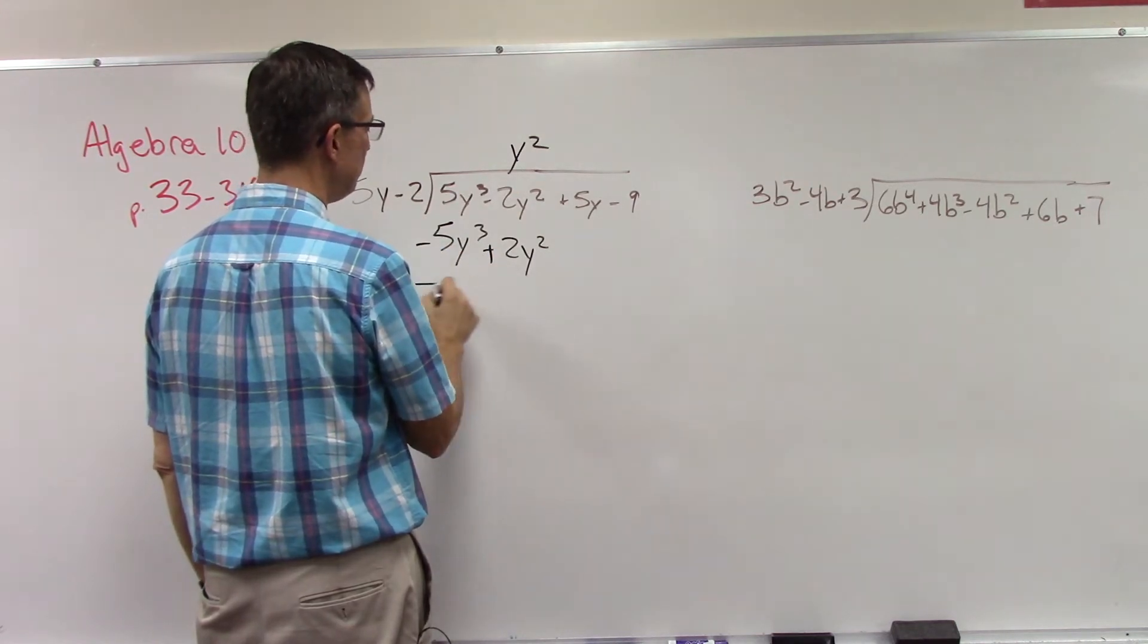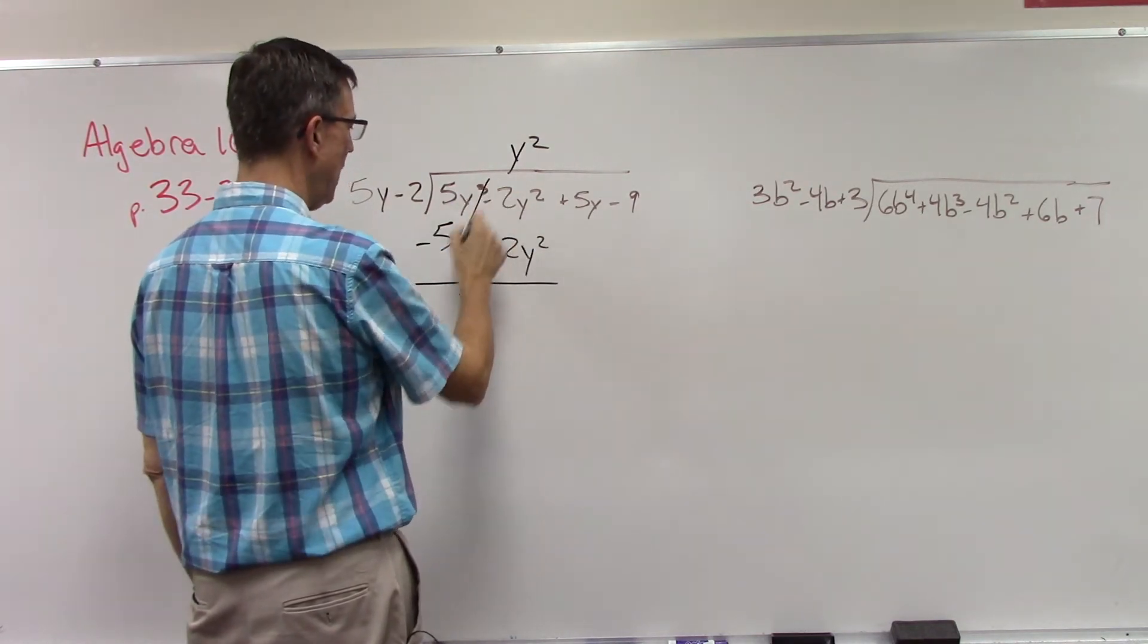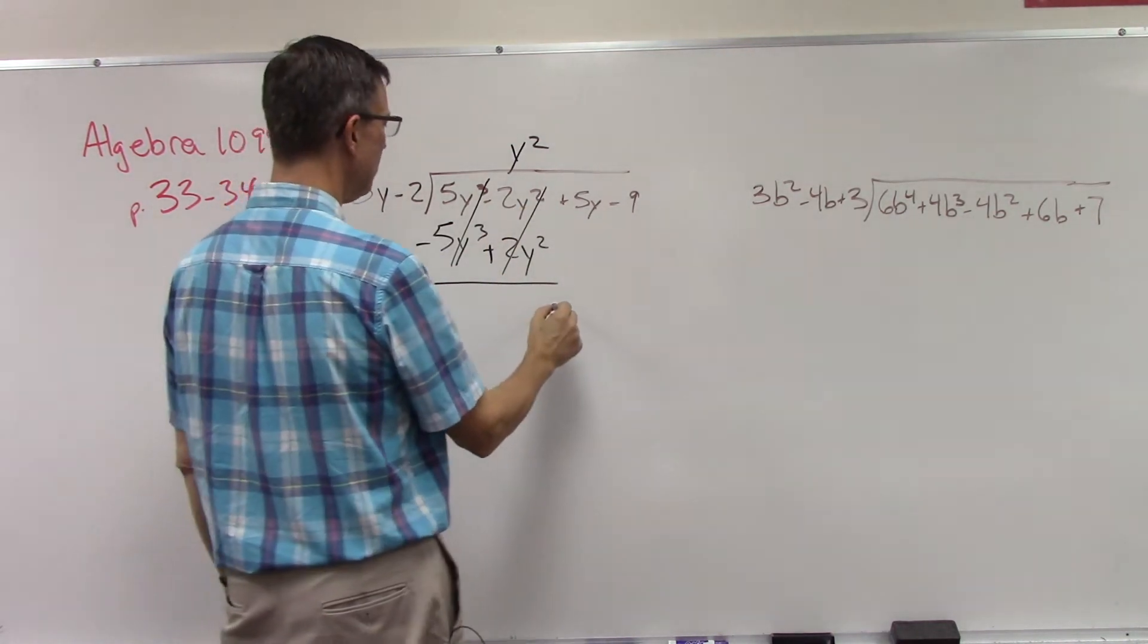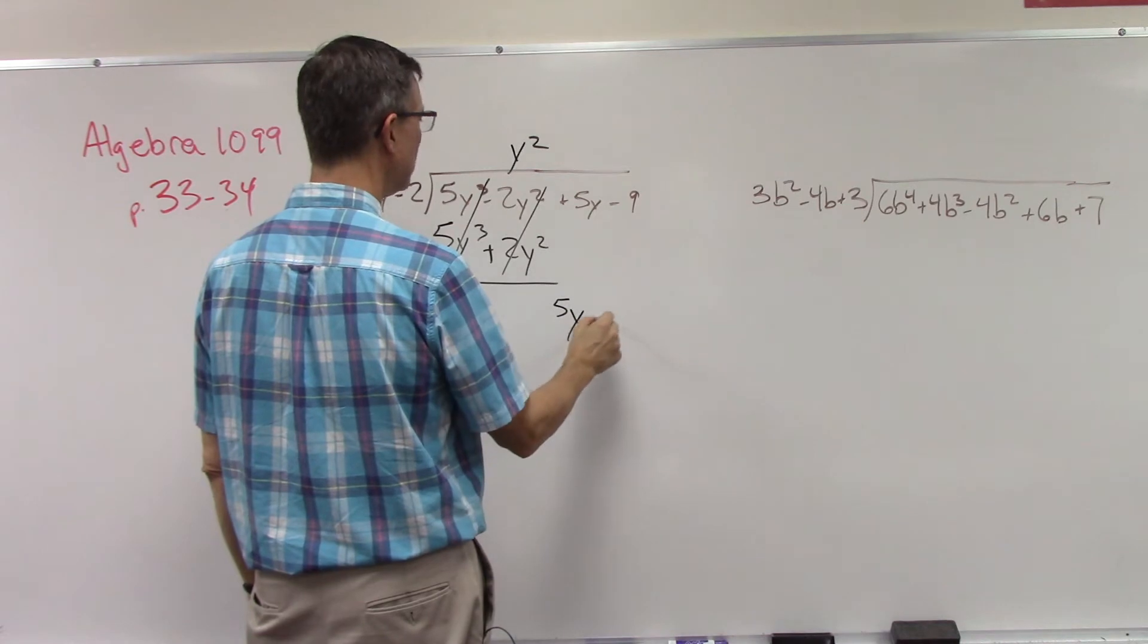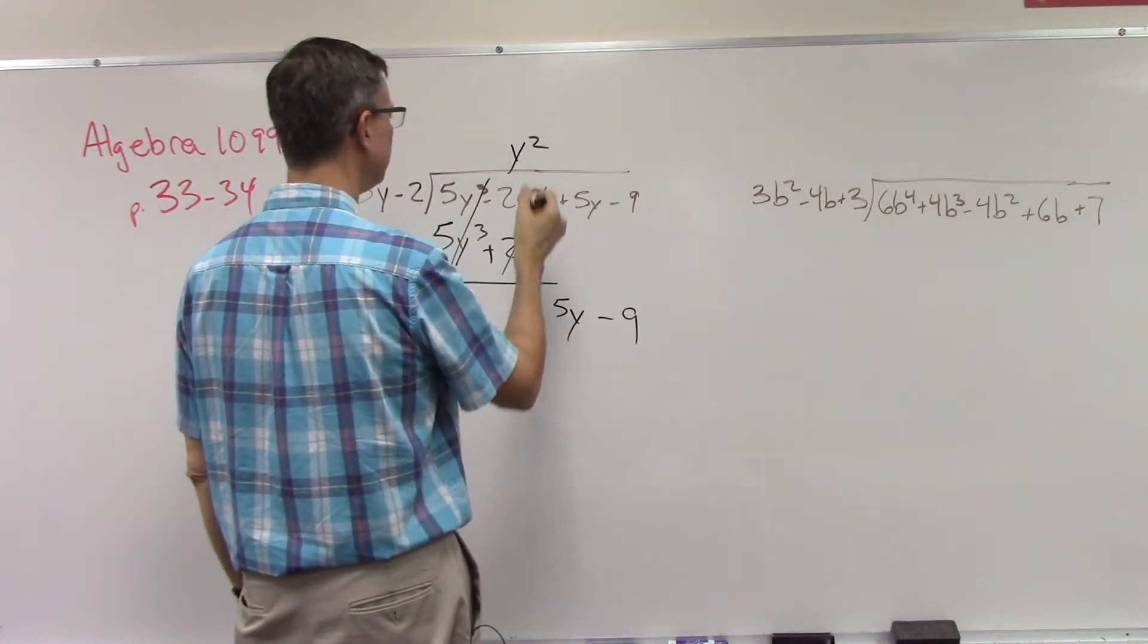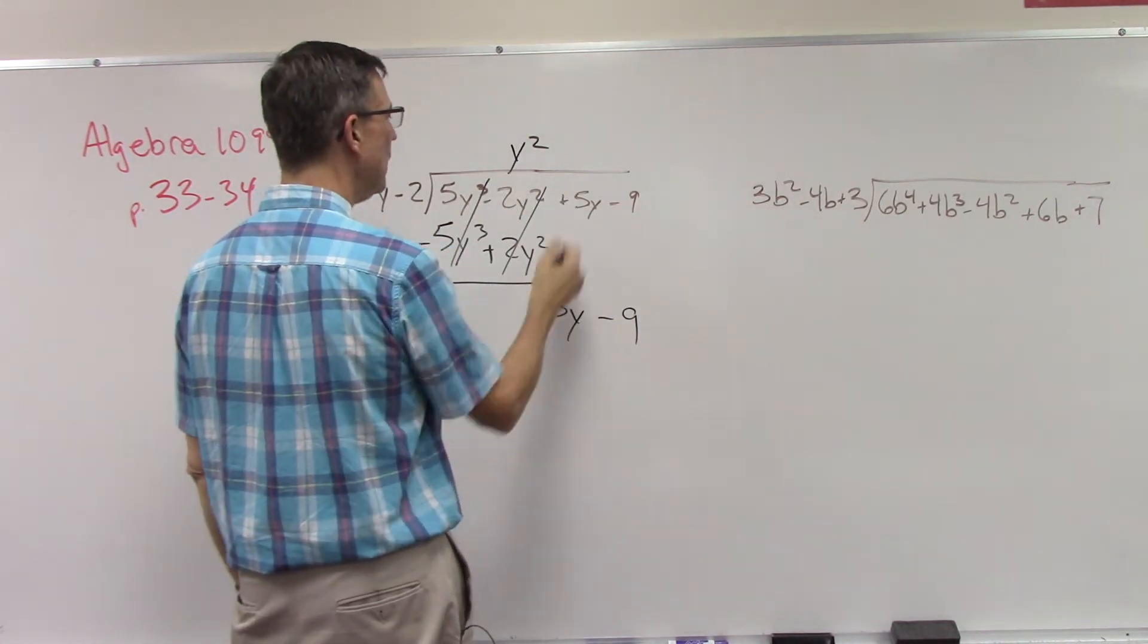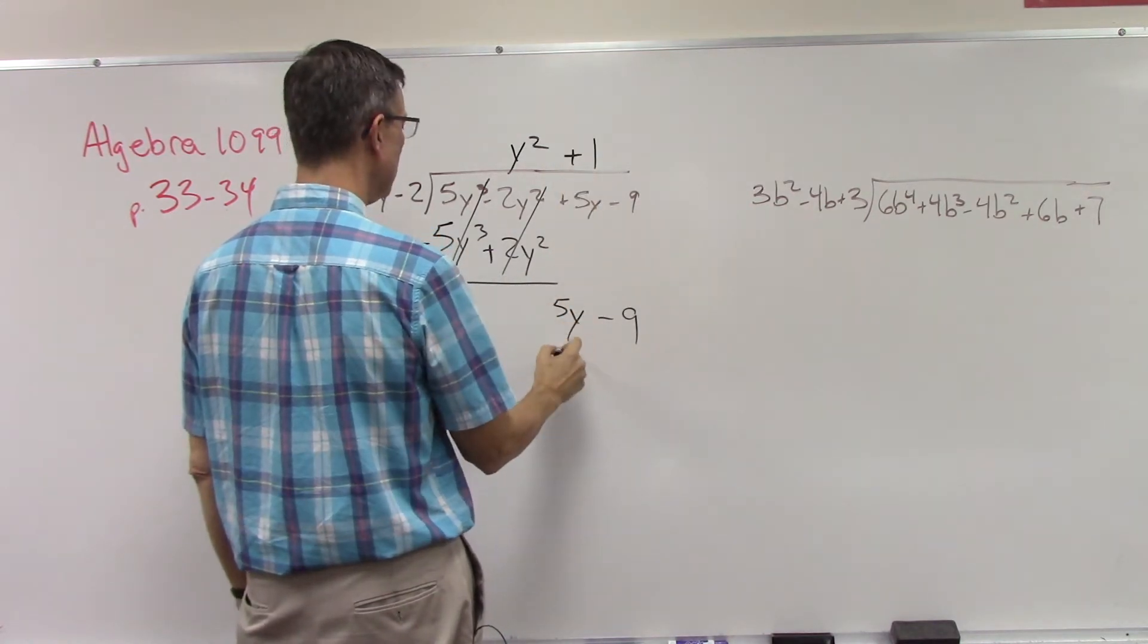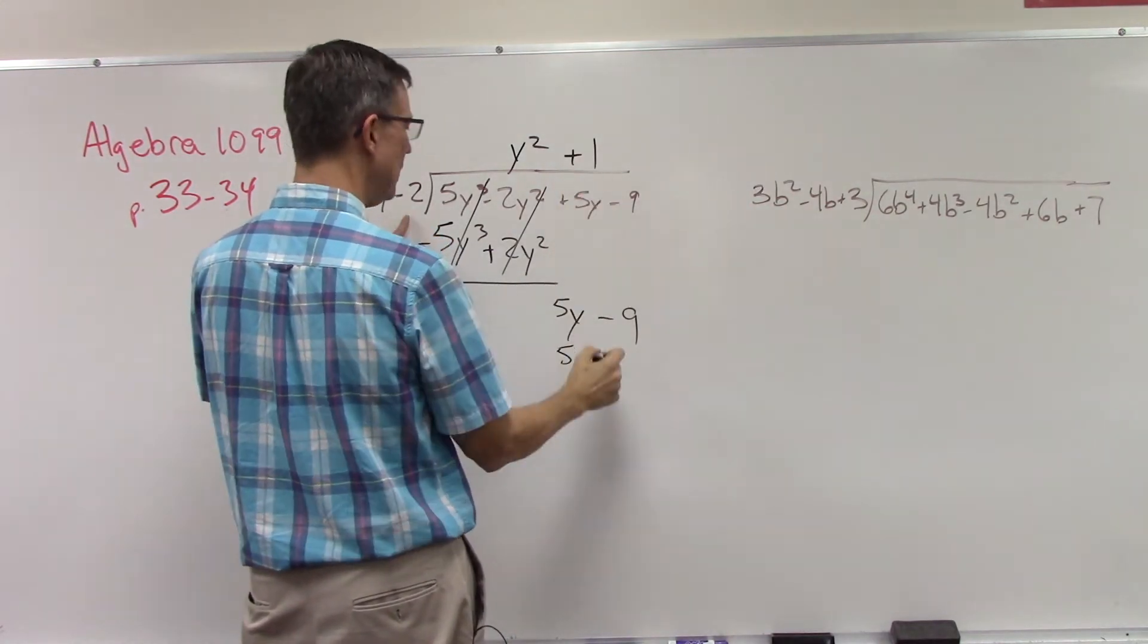Now we're going to bring down 5y and the negative 9. 5y times 1, okay, so we'll do plus 1. That gives me 5y. 1 times negative 2.